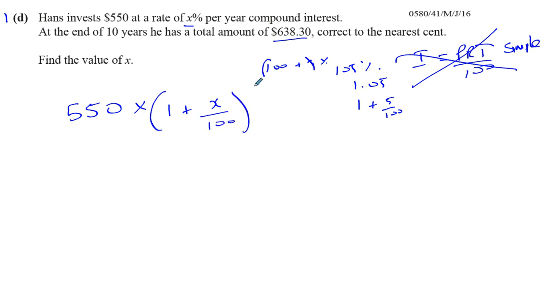To the power of 10, because it's 10 years. So if you haven't memorized the formula, it's not a big problem as long as you understand this concept. But there is a formula. The new value is equal to the principal, the original amount, times 1 plus the rate over 100 to the power of number of years.